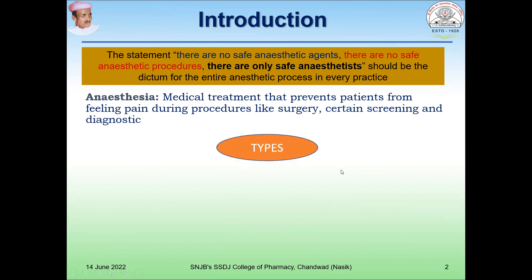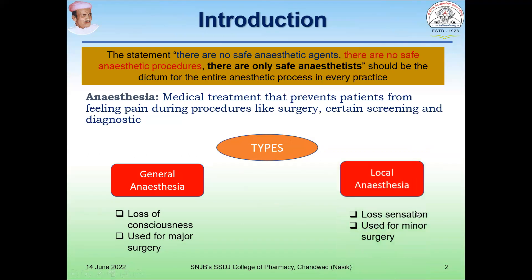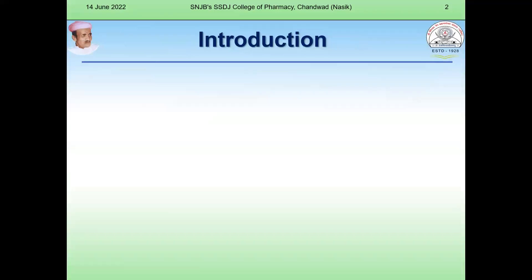Anesthetics are divided mainly into two types. One is general anesthesia, which produces loss of consciousness and is used for major surgical procedures. The other is local anesthesia, which is applied locally, produces loss of sensation, and is used for minor surgical procedures.